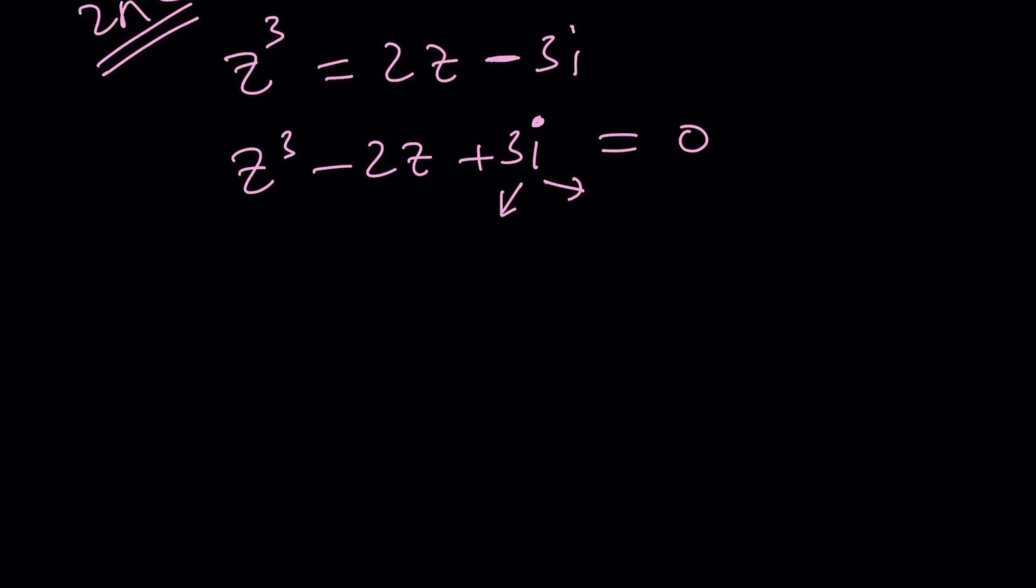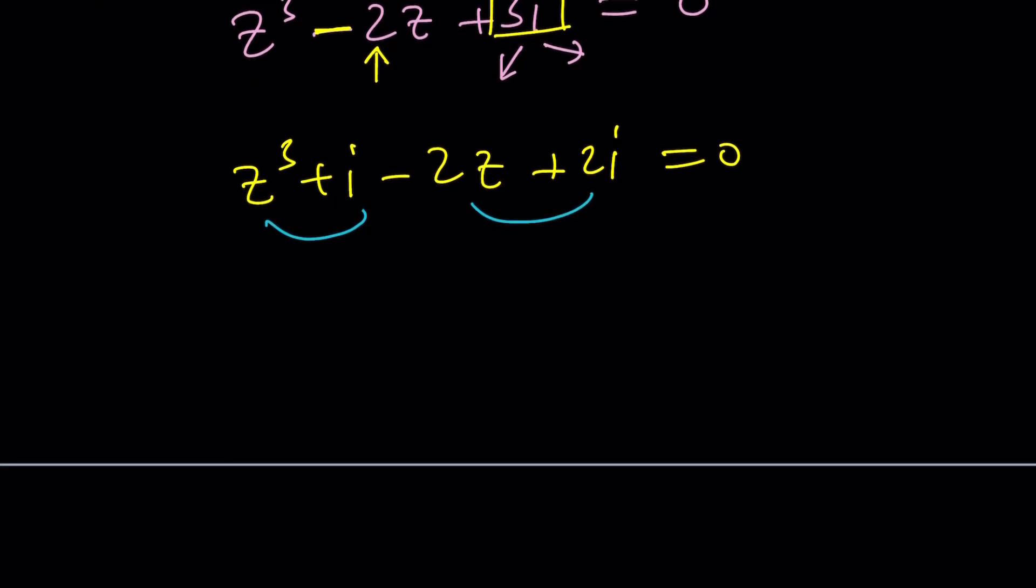I can go ahead and split up the 3I because I noticed that the coefficient of I is 3, and I have a 2 here. Ignore the negative 2 for now. I can kind of split it up this way: Z cubed plus I minus 2Z plus 2I. So I gave 2I to negative 2Z so that I can pair them up, and hopefully, this is wishful thinking. I know at the beginning it's kind of like, okay, you're hoping that something good is going to come out of this, and it actually does. Sometimes it doesn't.